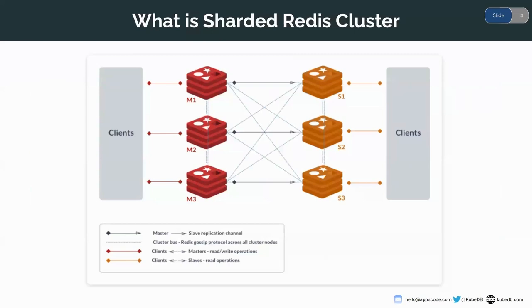Let's look at what a sharded Redis cluster is. Redis is an open-source in-memory data structure store — you can use Redis as a database, message broker, or streaming engine. Redis provides different data structures such as hash sets, sorted sets, and streams. Redis has different modes: standalone, cluster, and sentinel. Redis provides high availability via Redis Sentinel and automatic data partitioning with Redis Cluster. Using Redis Cluster, you can divide your data into different shards, and data will be available even when some nodes fail.